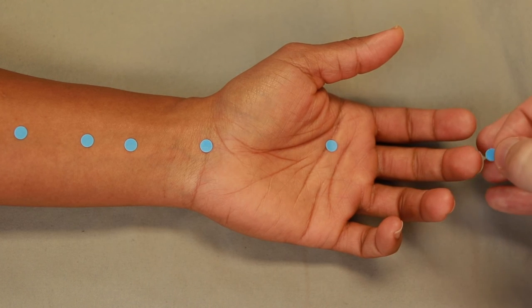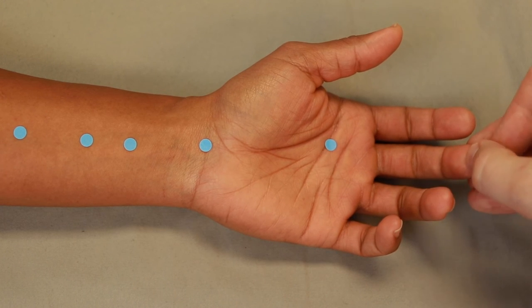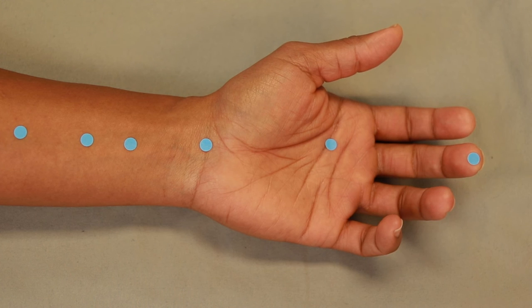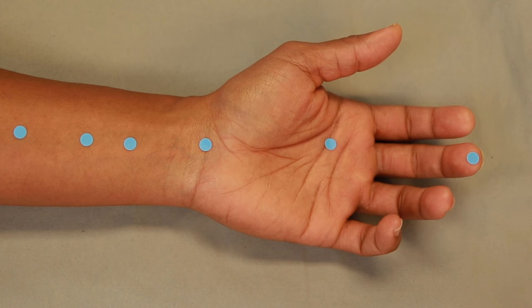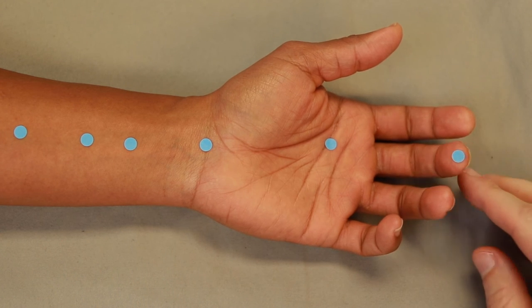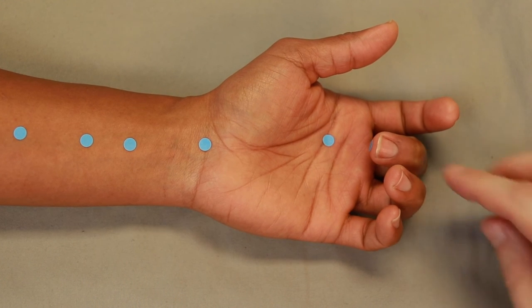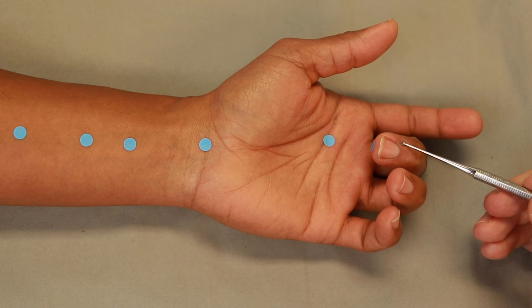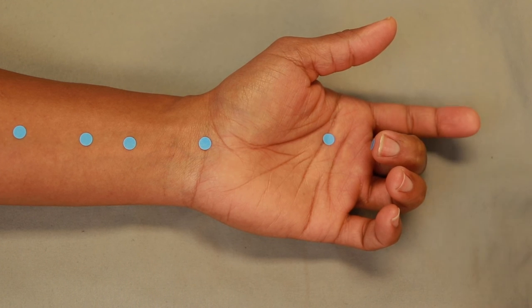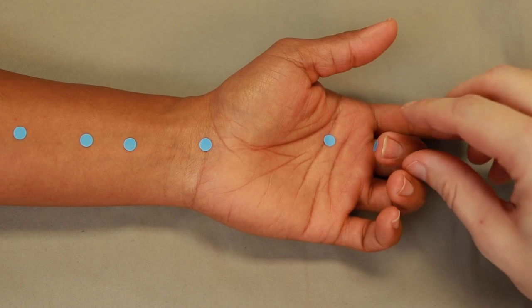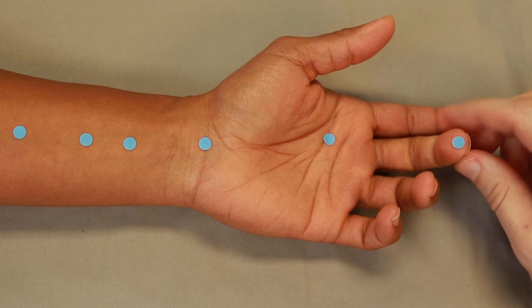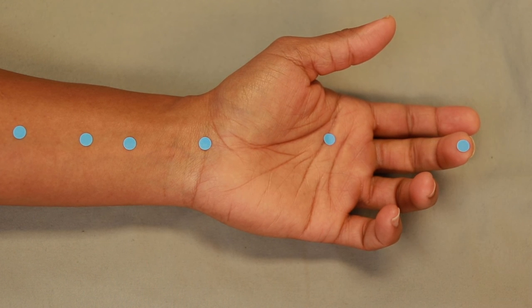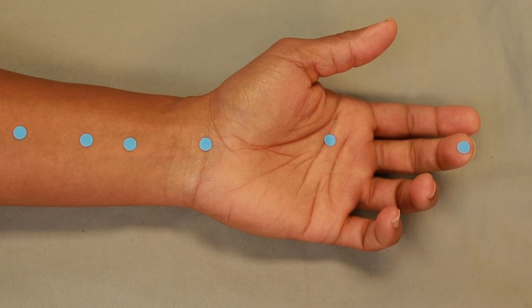Pericardium 9 is just on the tip of the middle finger. So most modern sources will locate it here. We also have a second option that we can locate pericardium 9 just like a regular Jing Well point, 1 cun from the corner of the nail on the radial side. But most modern textbooks will just put it on the tip of the middle finger. So that's the Han Jue Yin Pericardium Channel.